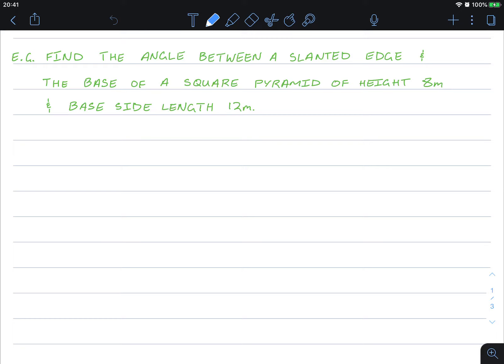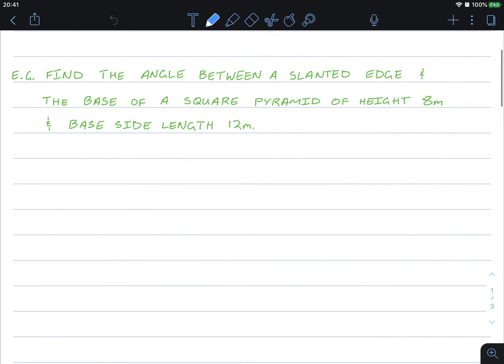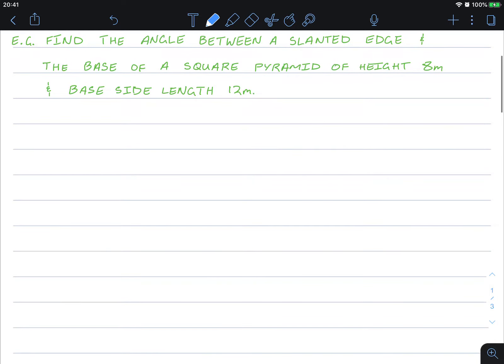Find the angle between a slanted edge and the base of a square pyramid of height 8 meters and base side length of 12 meters. Well first we need to draw a square pyramid with height of 8 and the base length of 12. Okay, so let's draw that out.